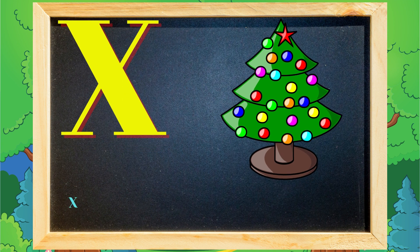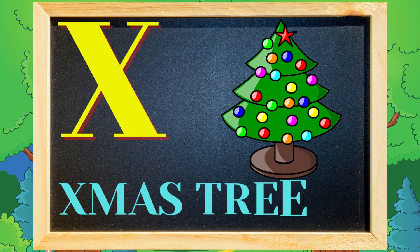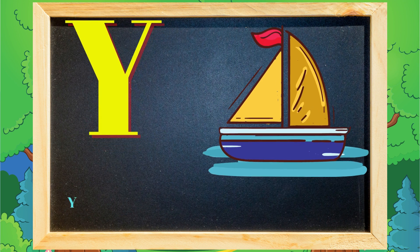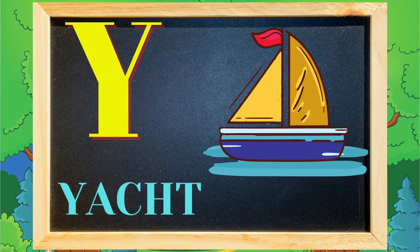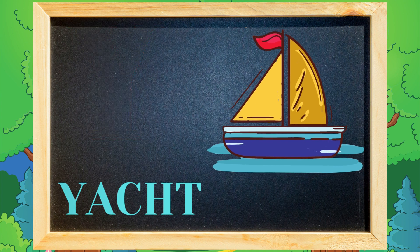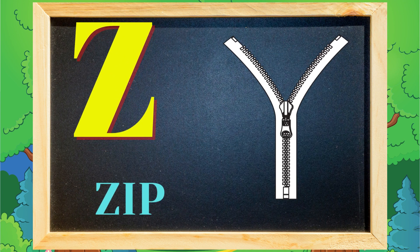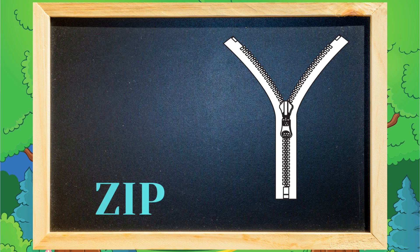X for x-mas tree, x-mas tree means x-mas tree. Y for yard, yard means nauka. Z for jeep, jeep means chain.